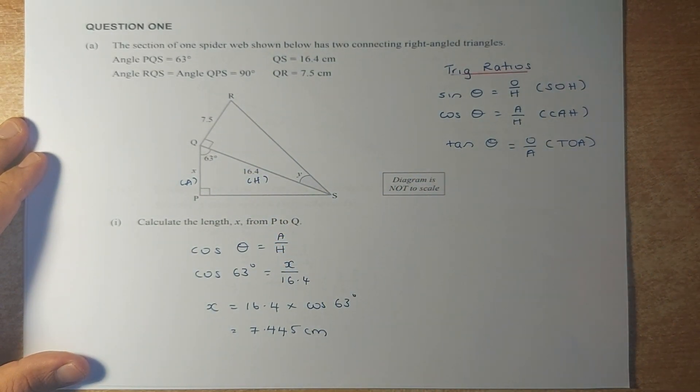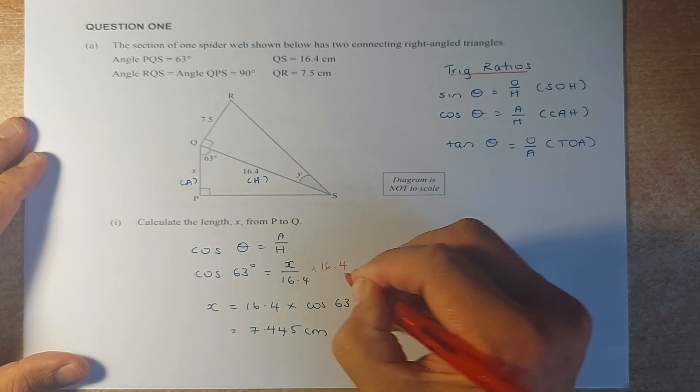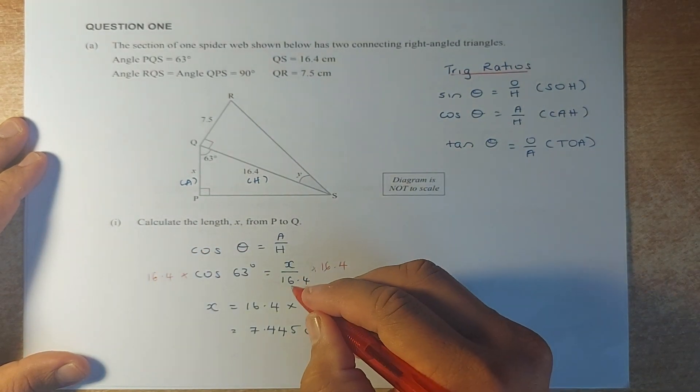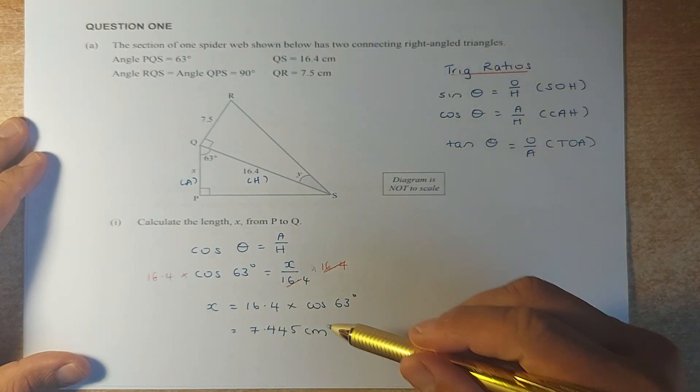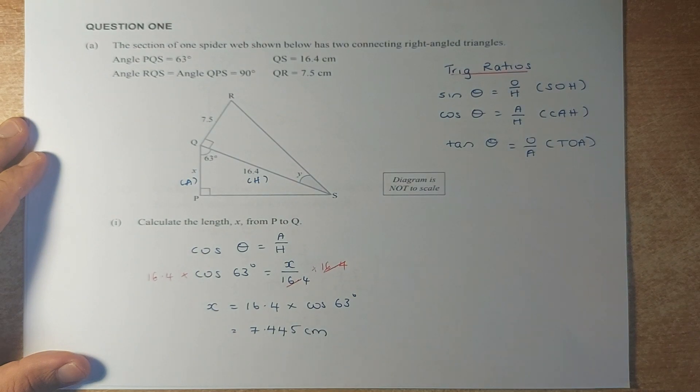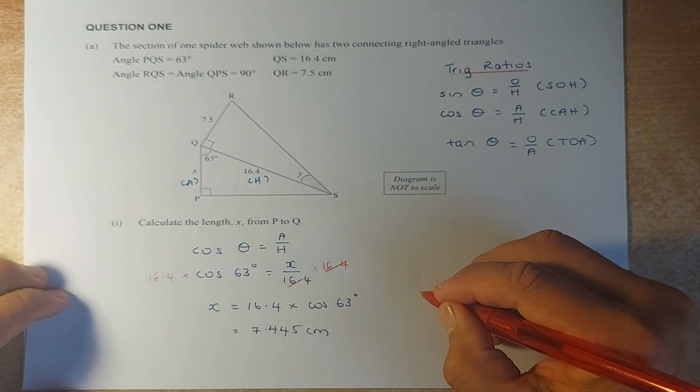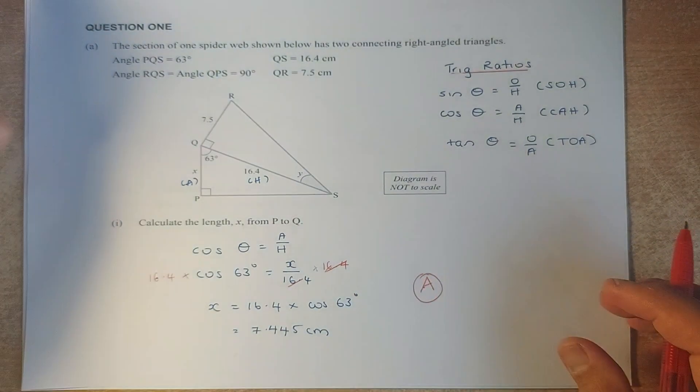Now to solve for X, you multiply 16.4 on the left and you must multiply 16.4 on the right so that the 16.4 will cancel out. So the answer is going to be X equals 16.4 multiplied by cosine 63. Put in your calculator and the answer is 7.445 cm. Not too bad, right?